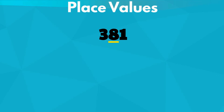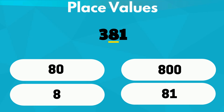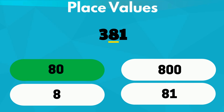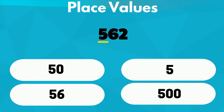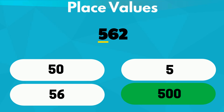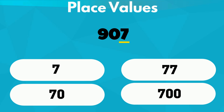Let's do more practice on place values. For the following numbers, choose the value of the underlined digit. The underlined digit 8 is in the tens place, so its value is 80. Next, 5 is in the hundreds place, so its value is 500.